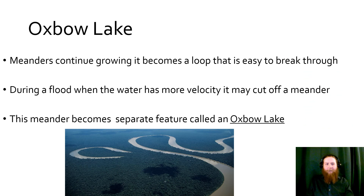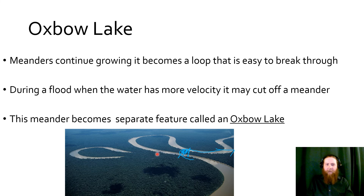Oxbow Lakes are a meander that got separated from the river. When we have these loops of meanders, eventually the water breaks through and starts flowing directly, skipping the whole loop. When that meander gets cut off, we call it an Oxbow Lake.